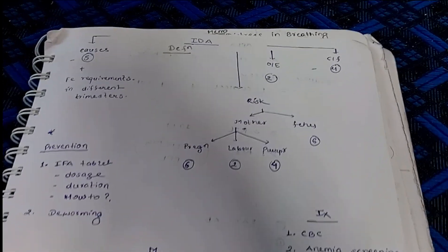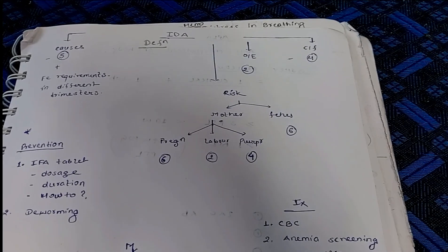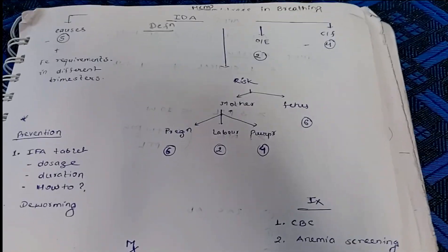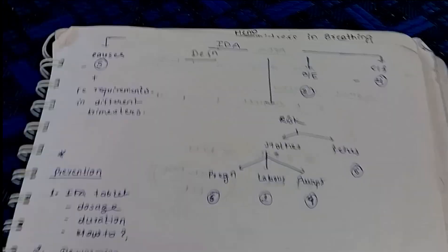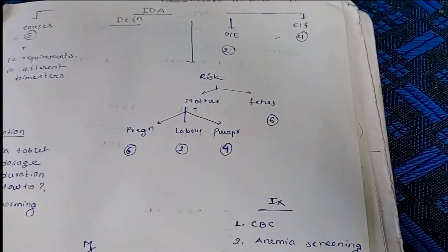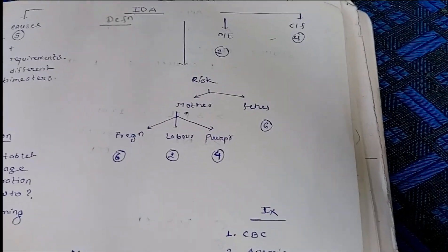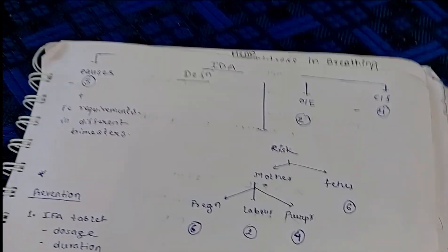Let's talk about iron deficiency anemia in pregnancy. In pregnancy, the most common anemia is physiological anemia, and the most common pathological anemia is iron deficiency anemia. The cutoff for anemia in pregnancy is hemoglobin less than 11 gram percent. This cutoff is lower than in normal females, where it is less than 13 grams, because pregnancy is naturally an anemic stage due to increased plasma concentration.